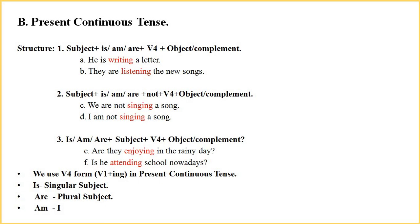Now we come to present continuous tense. The structure is: subject plus is/am/are plus fourth form of the verb plus object or complement. For example, 'He is writing a letter' — here 'he' is the subject, 'is' is the helping verb, 'writing' is the fourth form of the verb, and 'a letter' is the object. Next example: 'They are listening to the new songs' — 'they' is the subject, 'are' is the helping verb, 'listening' is the fourth form, and 'the new songs' is the complement.